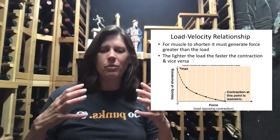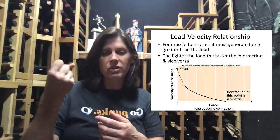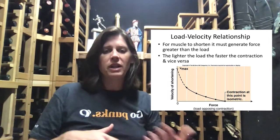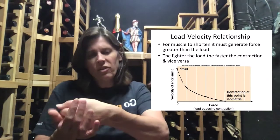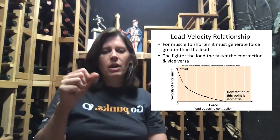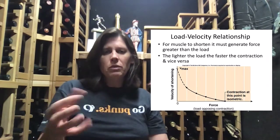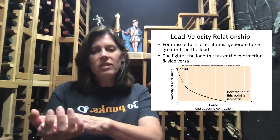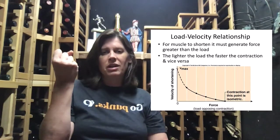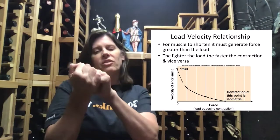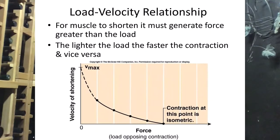The load-velocity relationship states that when the load is light, you can contract faster, and when the load is heavy, contractions are slower. There is a point when the force or load is so heavy that the contraction becomes isometric — you can't overcome the load, as when you try to pick something up and simply can't move it.